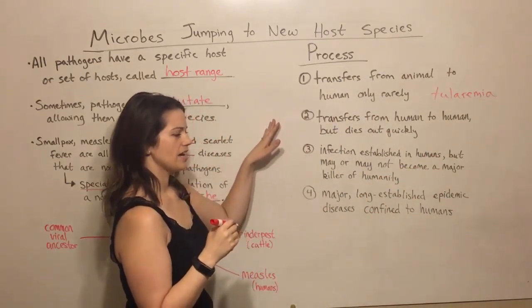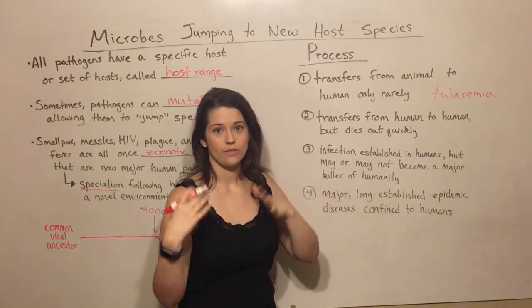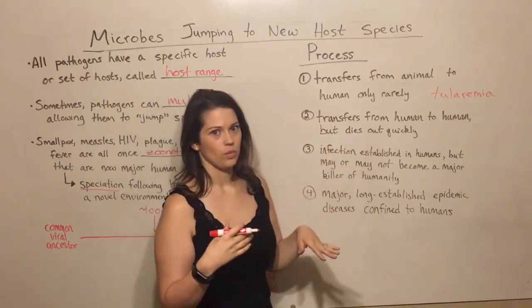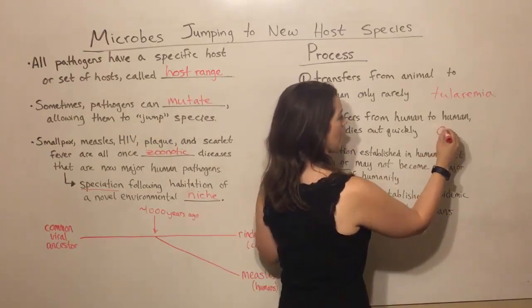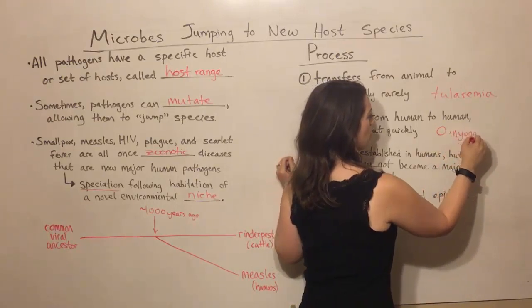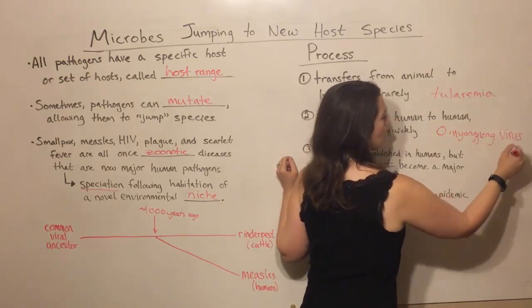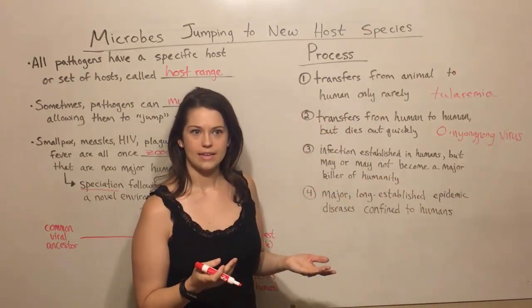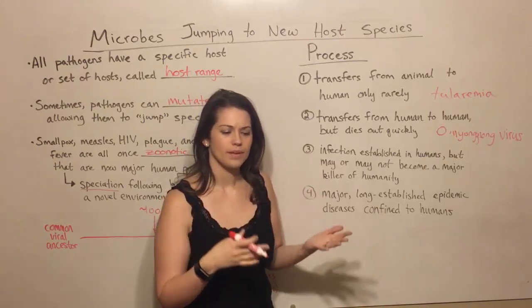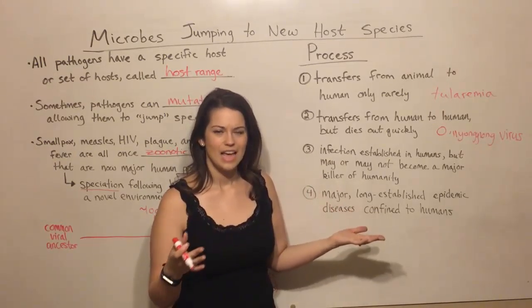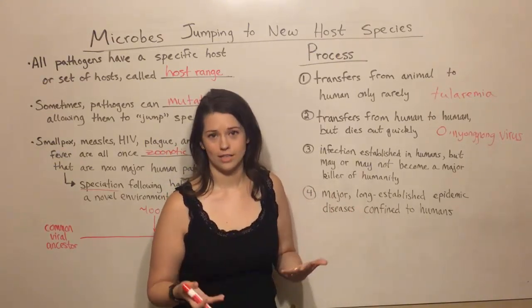The next step is when the pathogen actually mutates to the point where it can enter into one human host and then spread from human to human, but it dies out rather quickly. An example of this would be in the late 1950s, there was a virus called the O'nyong-nyong virus. It caused an epidemic and was initially a little scary, but then it died out. It entered a population, spread from person to person, several people got sick, but then it was no longer causing human infections.